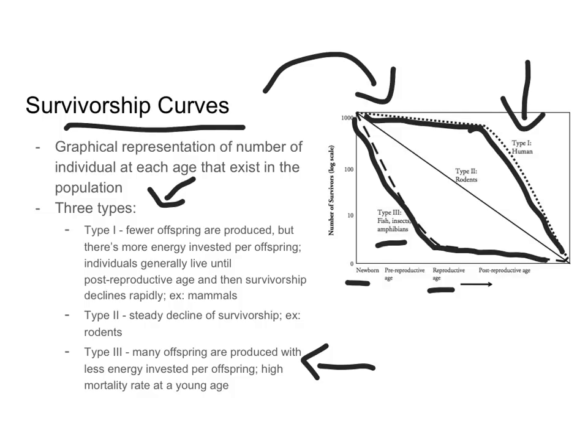In the middle is a type two curve, which is basically a steady decline of survivorship — it falls somewhere in between type one and type three. There's a medium amount of offspring born and some energy is invested in keeping them alive, but not as much.